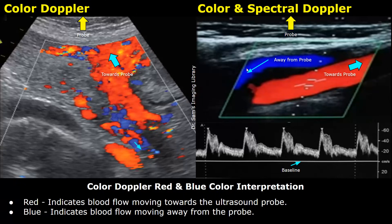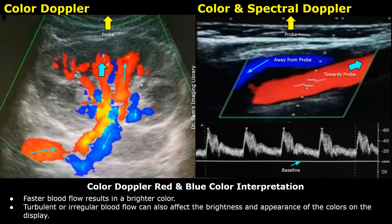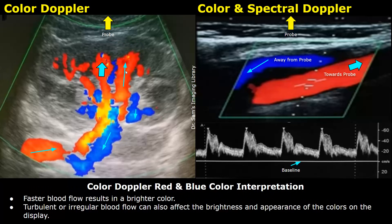This is an image of the kidney with color Doppler applied. We can see the kidney, and the ultrasound probe is towards the top of the image. The red areas in the vessels represent blood moving towards the probe. We can determine that blood is going into the kidneys through this vessel, so this is the renal artery and its branches.